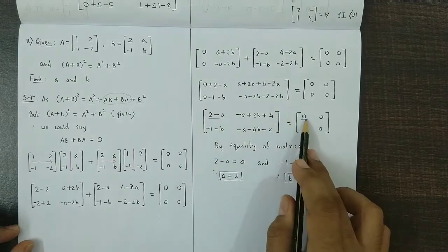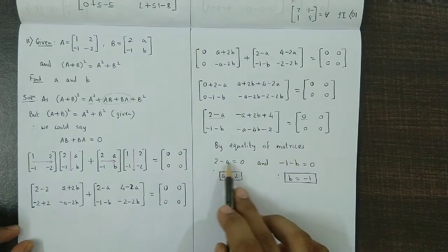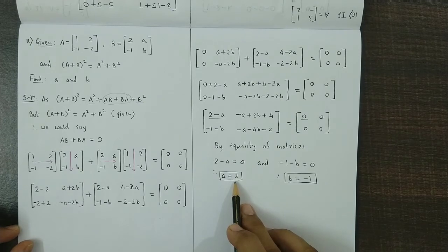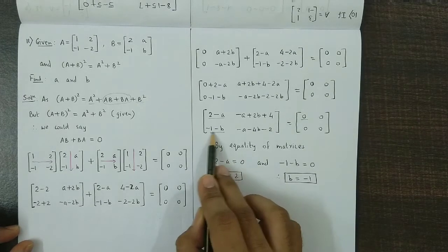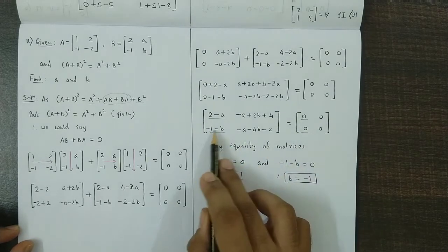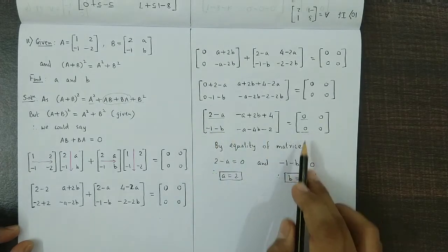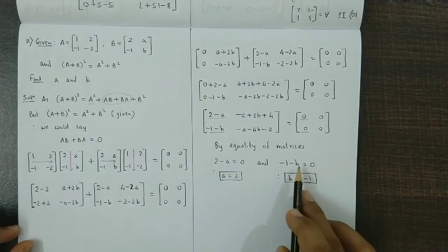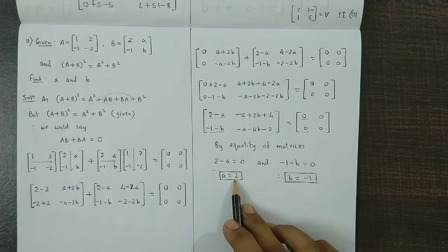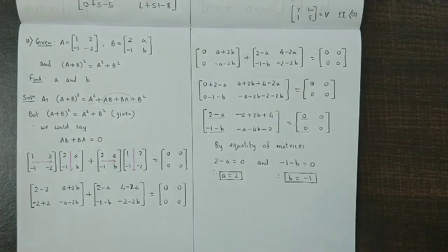To find a, we equate 2 minus a equal to 0, giving a equal to 2. To find b, we equate minus 1 minus b equal to 0, giving b equal to minus 1. So a is 2 and b is minus 1.